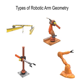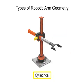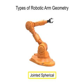There are four main types of robotic arm geometry: rectangular, cylindrical, spherical, and jointed spherical.